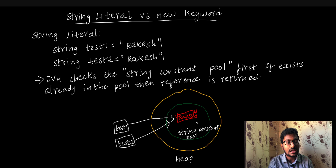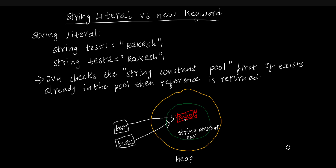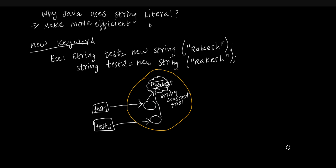When we duplicate the data, we will use less memory. This is one of the important benefits of string literal. The second approach is the new keyword. What is the new keyword?